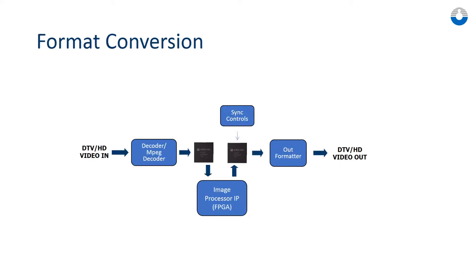Another type of application for FIFO is as a format converter buffer. By working with a simple FPGA, as shown in this block diagram, the input source can be buffered in the FIFO after A2D processing. The FPGA format converter IP can then read data from the FIFO and perform format conversion for later processing.